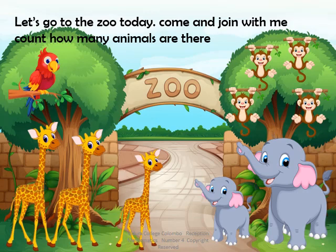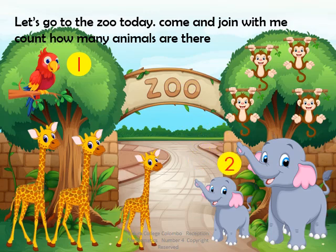Okay, kids. Shall we once again count and see how many animals are there? Parrots — see how many parrots are there? One. There is only one parrot. Now shall we count the elephants. One, two. There are two elephants. Now we are going to count the giraffes. One, two, three. There are three giraffes in the zoo.